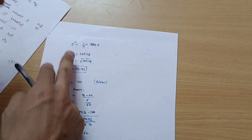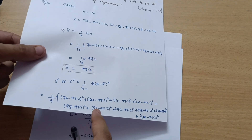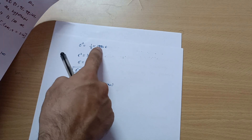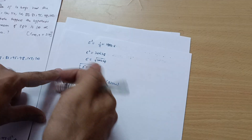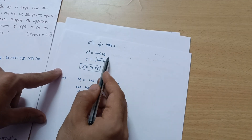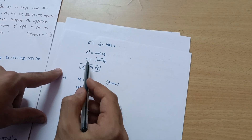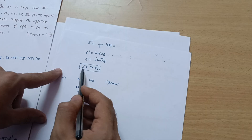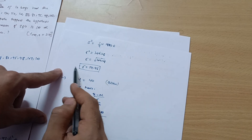Calculating sigma-squared: we get 1 over 9 times 18,083.6, which gives sigma-squared equal to 209.28. Taking the square root, sigma equals the square root of 209.28, which gives sigma equal to 14.46. Sigma-squared is the variance and sigma is the standard deviation.